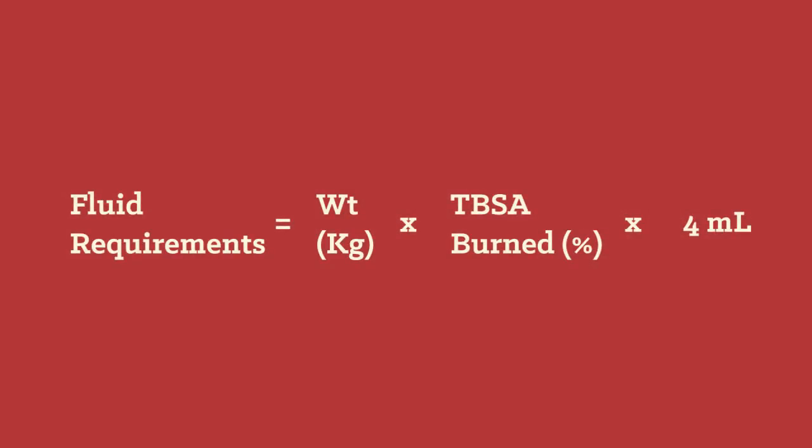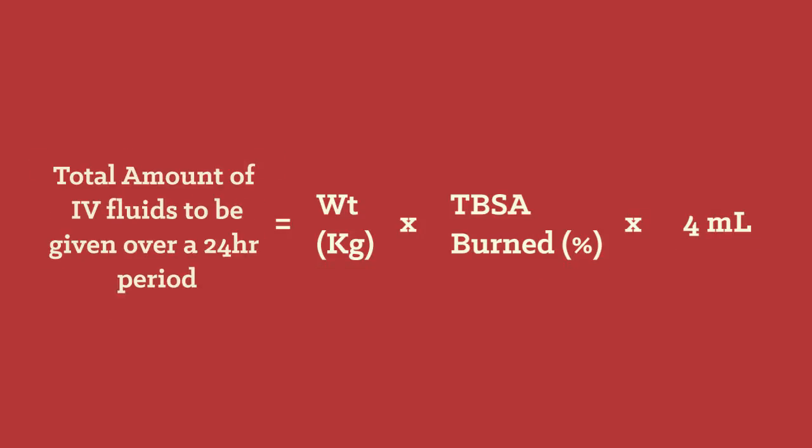This is the Parkland formula. It takes into account a person's weight multiplied by the total body surface area burned as a percentage multiplied by 4 cc's. This equation will give you the total amount of fluids to be given over the 24 hour period since the burn occurred.